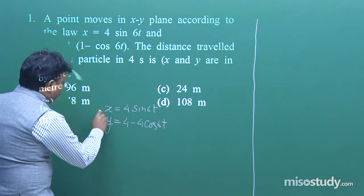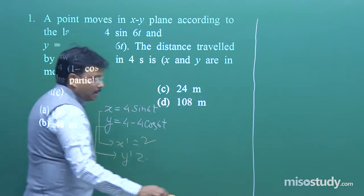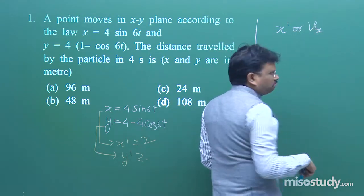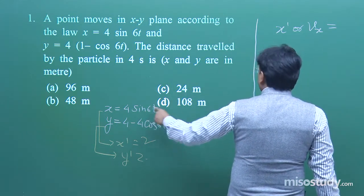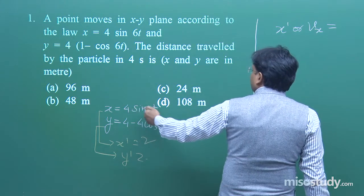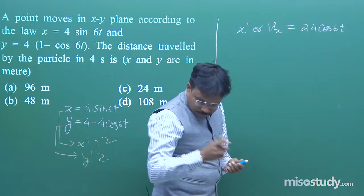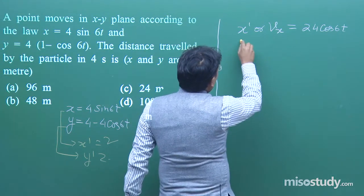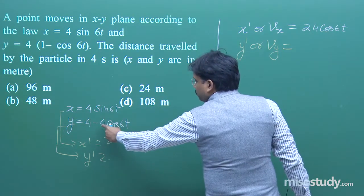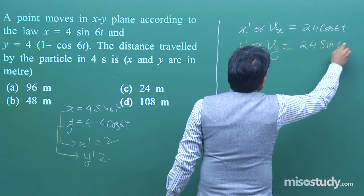We can get vx = x′, which gives 4 × 6 cos(6t) = 24 cos(6t). Similarly, vy = y′ gives 4 × 6 sin(6t) = 24 sin(6t).